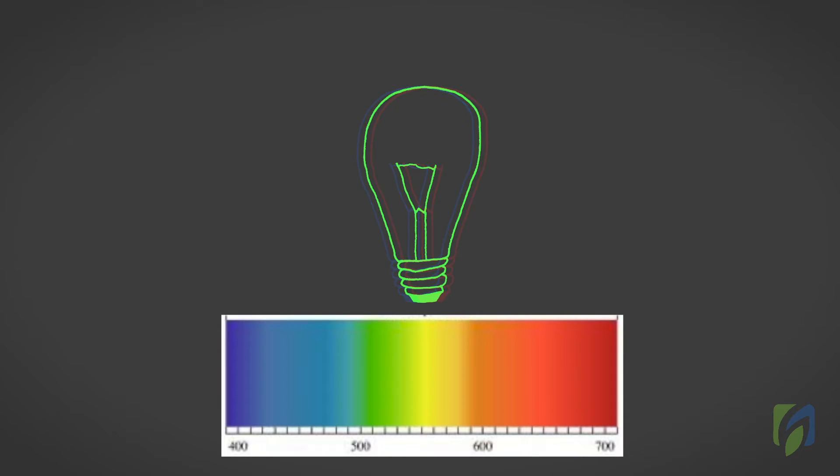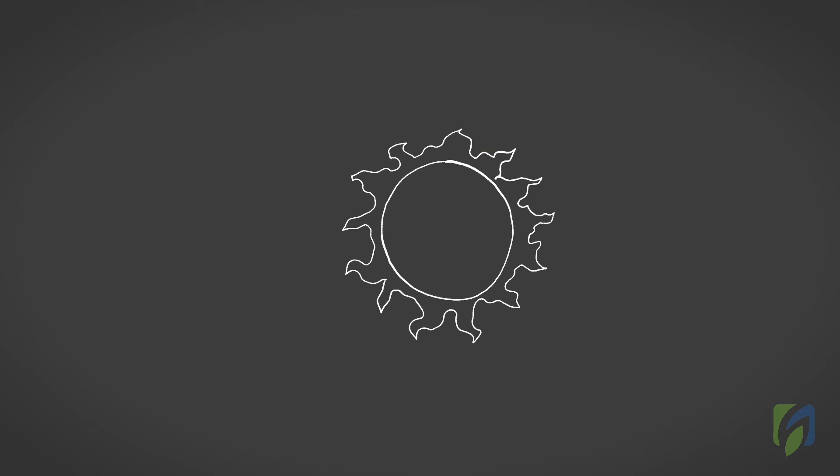Green light is the portion of light that has wavelengths between 500 and 600 nanometers. Red light is the portion of light that has a wavelength between 600 and 700 nanometers. About half the sun's radiation falls within the photosynthetic wave band.